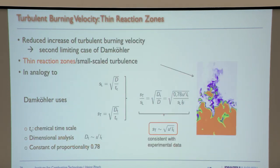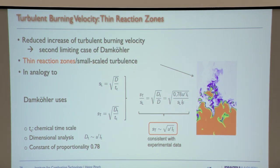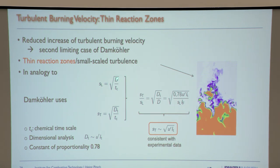That's where we enter Damköhler's small-scale regime, or what we call the thin reaction zones regime. He thought of a different limit. If I look at the laminar flame, s_L is just the square root of diffusivity divided by the chemical time scale.